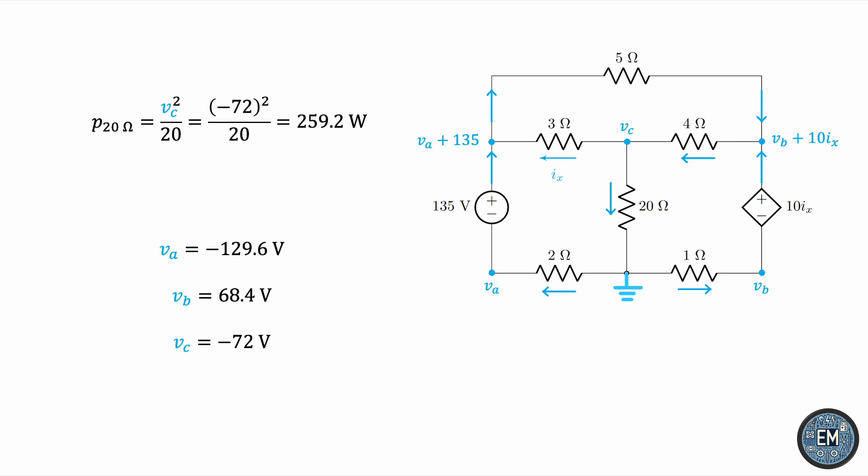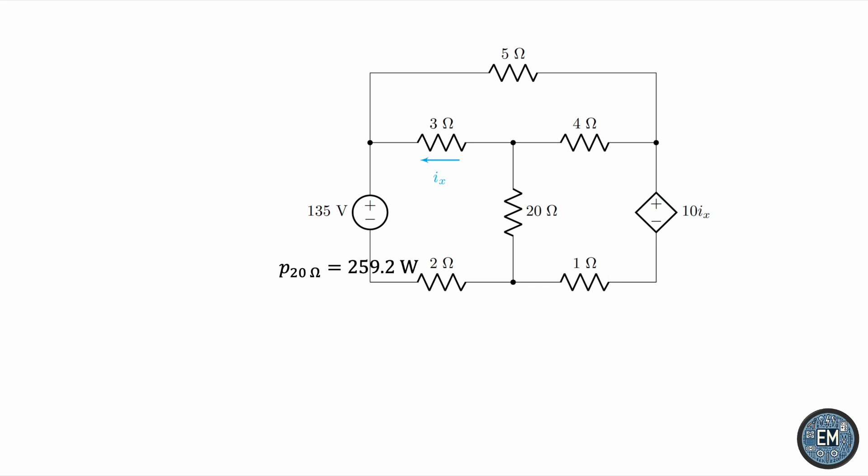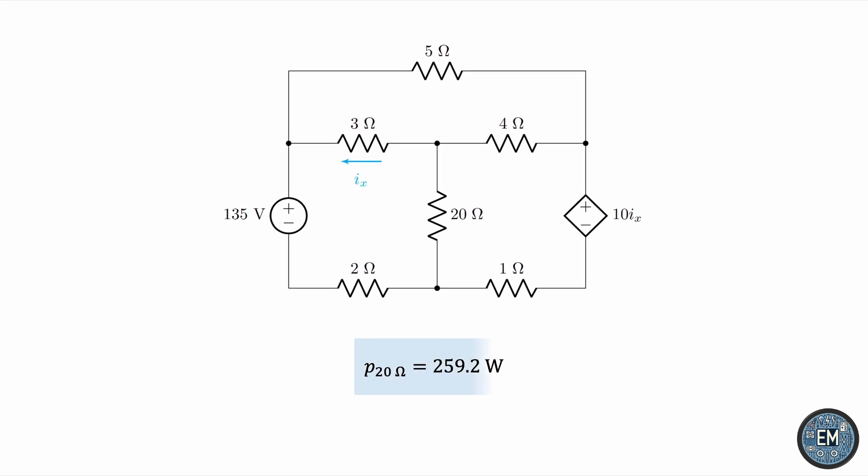So, that's it. The power dissipated in the 20-ohm resistor is around 260 watts, and that solves the problem. Are there easier methods? Definitely. But using nodal analysis is a possibility here. And that is what the video aimed to demonstrate.